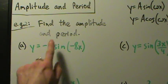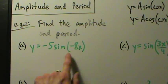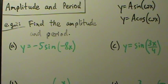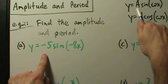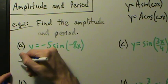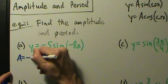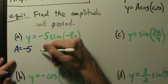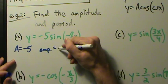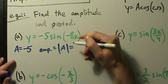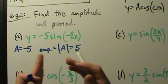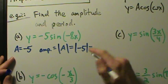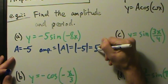Part A: find the amplitude and period of y equals negative 5 sine of negative 8x. We want to identify what A and omega are. A is the coefficient out front, so A equals negative 5. The amplitude is the absolute value of A, which is the absolute value of negative 5, which is just positive 5.